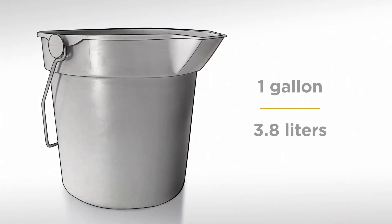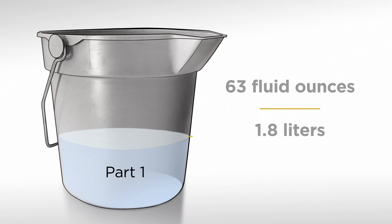For example, to make one gallon or 3.8 liters of DCON7, you will use 63 fluid ounces or 1.8 liters of Part 1,